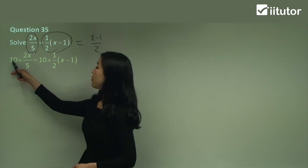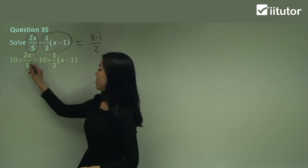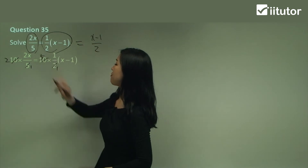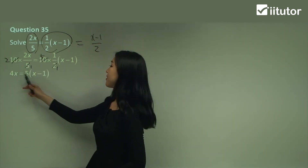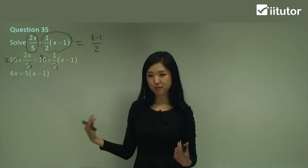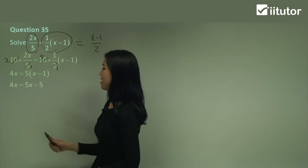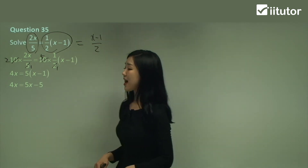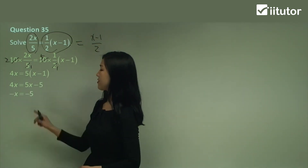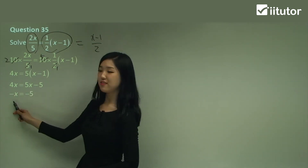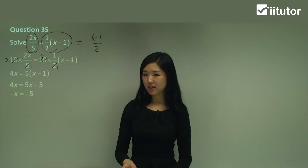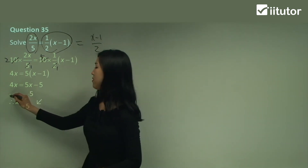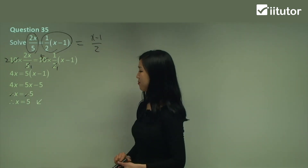Now let's simplify. 10 divided by 5 — that becomes a 1 and a 2. And 10 divided by 2 — that becomes a 1 and a 5. So we have 2 times 2x, which is 4x, and 5 times (x − 1). Expand the grouping symbols: 4x equals 5x minus 5. Now gather your like terms — move the 5x to the other side. So 4x minus 5x is negative x. Negative x equals negative 5. Since there's a negative on both sides, you can cancel the negatives, so x equals positive 5.